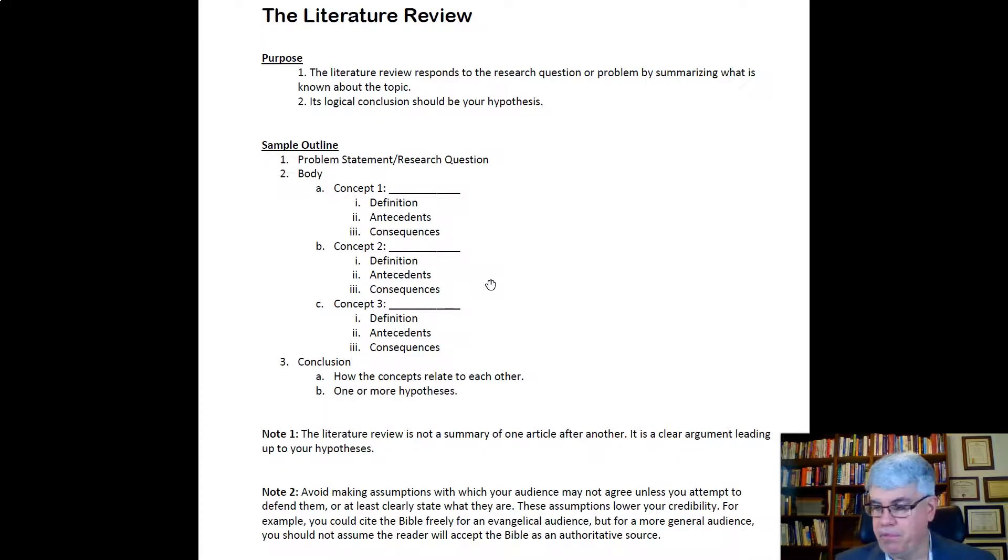And then maybe the third concept would be how gender affects cookie eating. So, again, I'd have to define it. The antecedents to gender, most people would say they're primarily biological. But there's also sociological factors involved. We're talking about gender and not just physical sex. And then what are the consequences? What do we know how men and women are different? What do we already know that they do differently because of their gender?